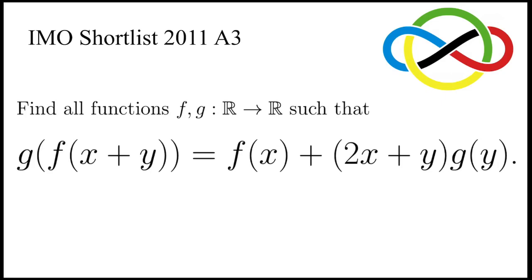Let's take a look at this problem, taken from the shortlist of the International Mathematical Olympiad 2011. Find all functions f and g that map the set of real numbers to itself, such that g(f(x+y)) = f(x) + (2x+y)g(y).